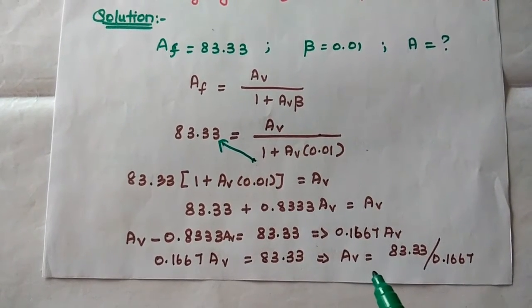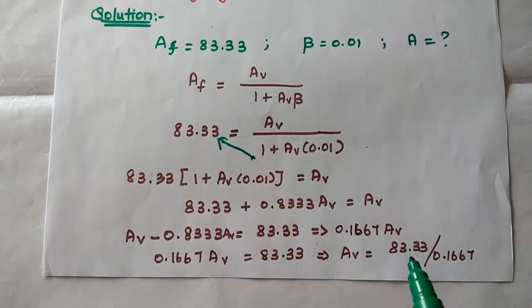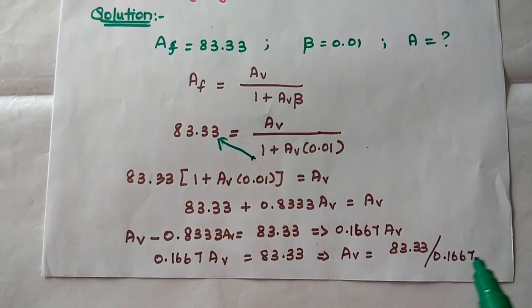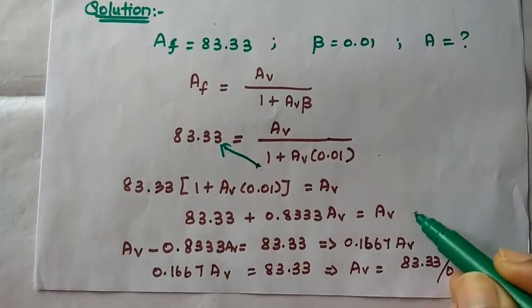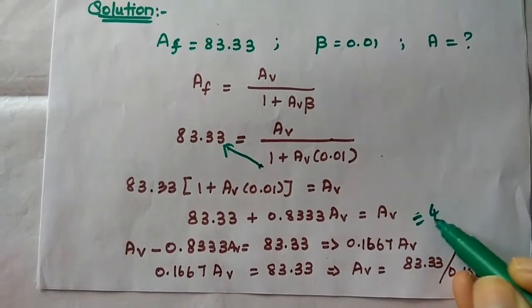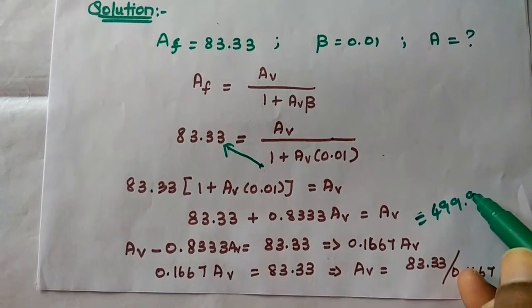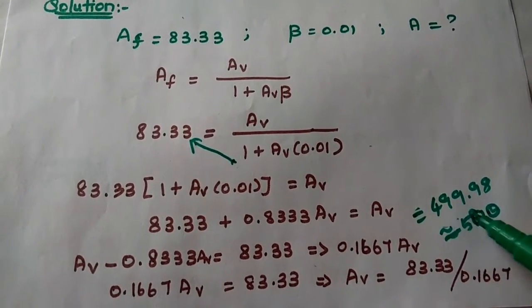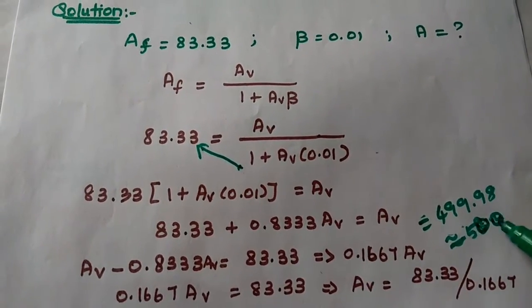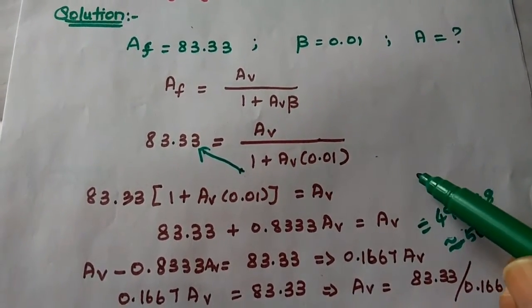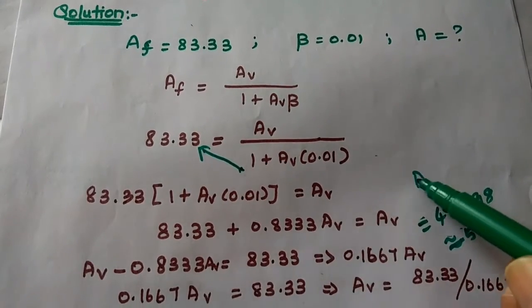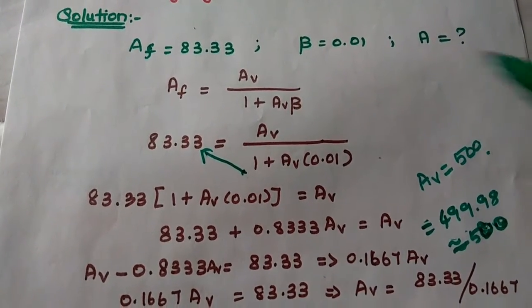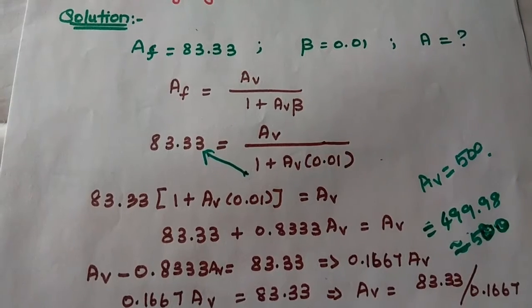From this, A = 83.33 / 0.1667 = 499.98, which is approximately equal to 500. So the voltage gain without feedback is 500.